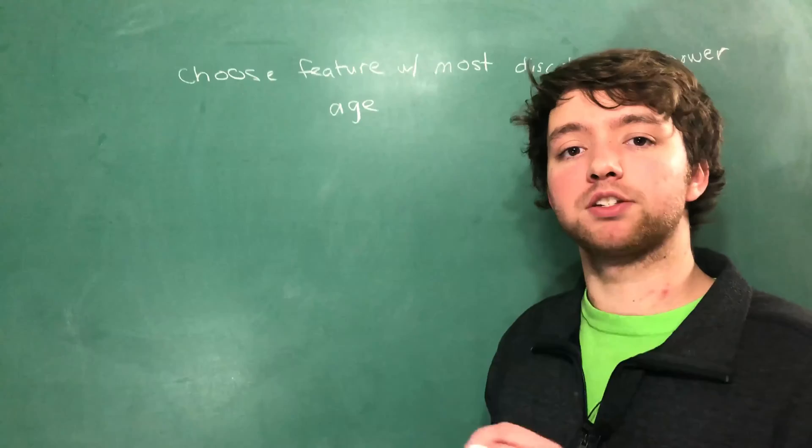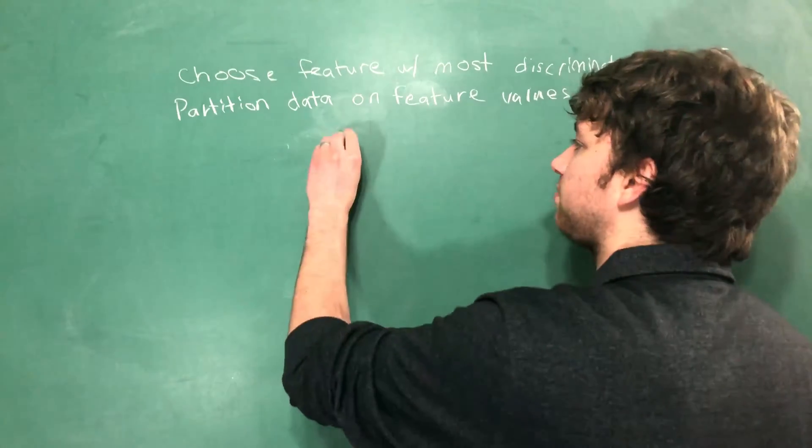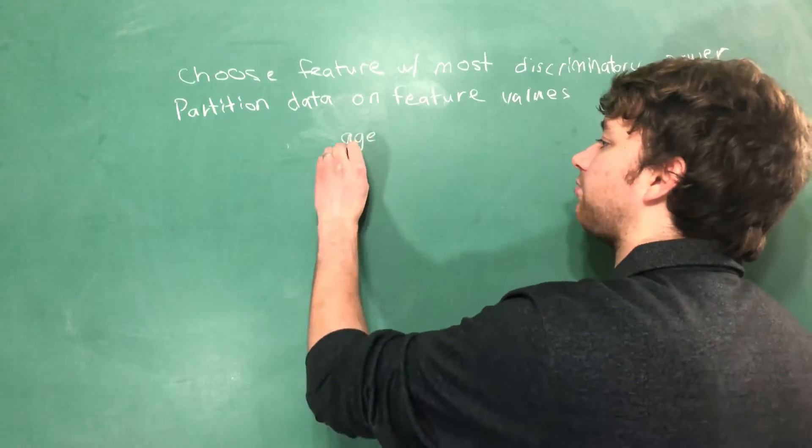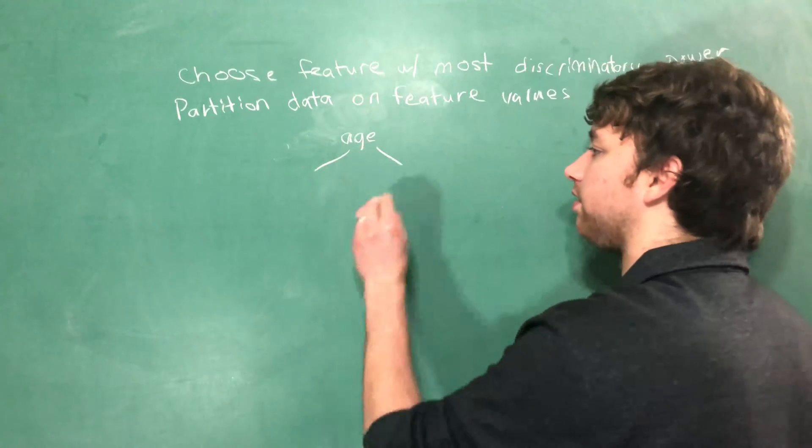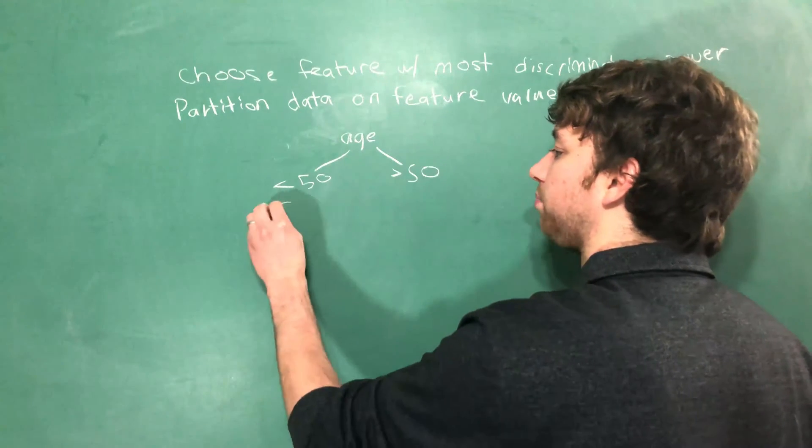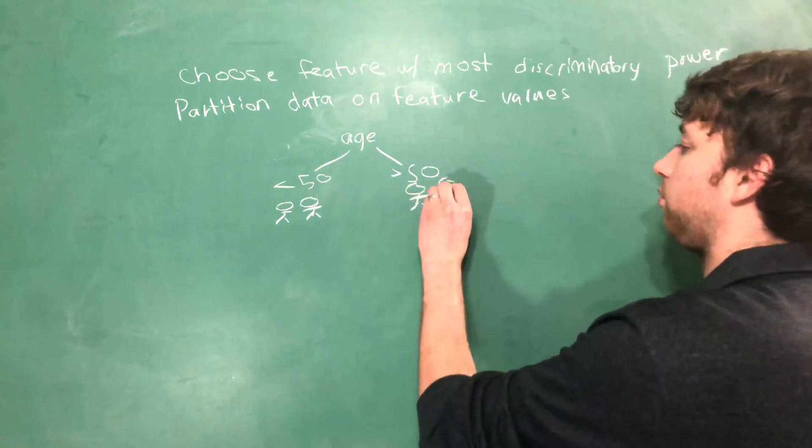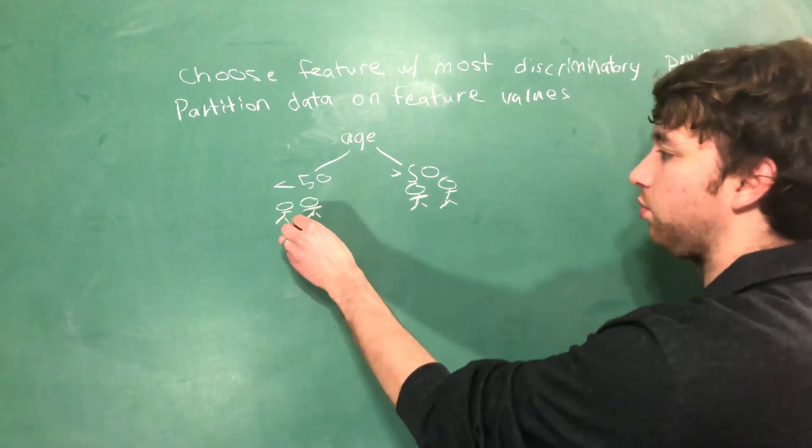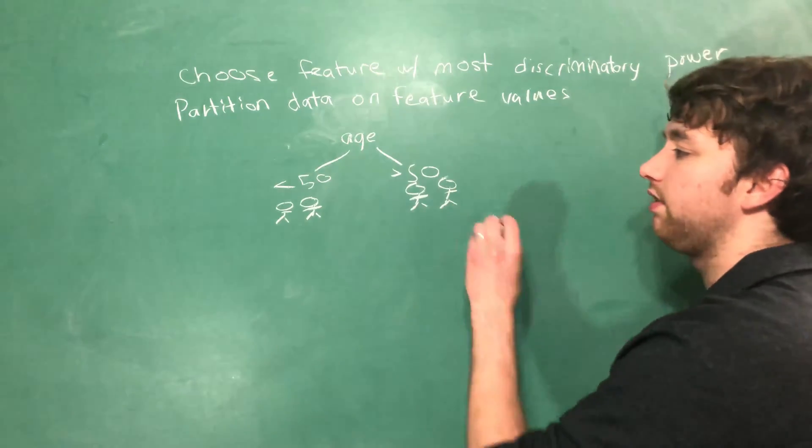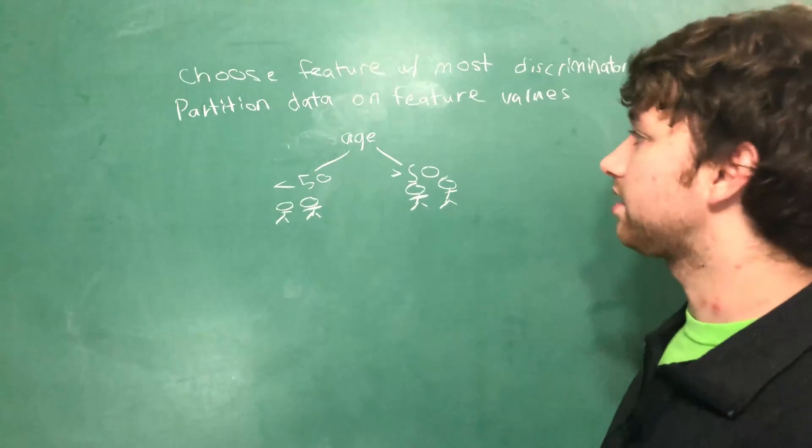The next thing it's going to do is partition the data based on the feature of choice. What this means in the example of age, if we split less than 50 and greater than 50, is it's going to split our people into two groups, where the people who are less than 50 are on one end, and the people who are greater than 50 are on the other end.